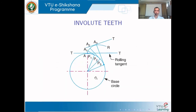Coming to the involute profile, this curve is obtained by tracing a point on a line tt as it is rolled over a circle. Alternatively, imagine a circle wound by a thread — as you unwound the thread, the tip of the thread traces the involute curve.